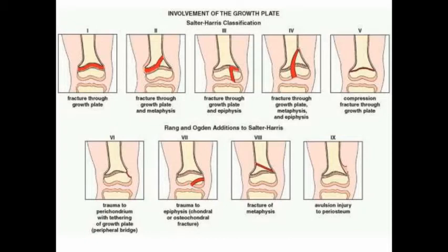In these pictures, alongside the original five Salter-Harris fracture types, you can also see the Rang and Ogden additions. Type 6 shows trauma to the perichondrium with tethering of the growth plate. Type 7 shows trauma to the epiphysis, Type 8 is a fracture of the metaphysis, and Type 9 is an avulsion injury of the periosteum.